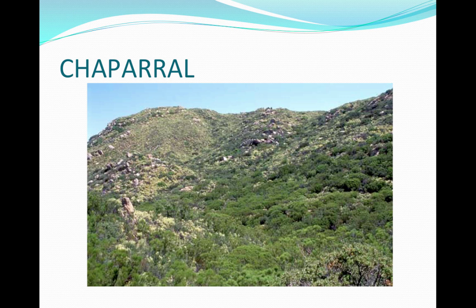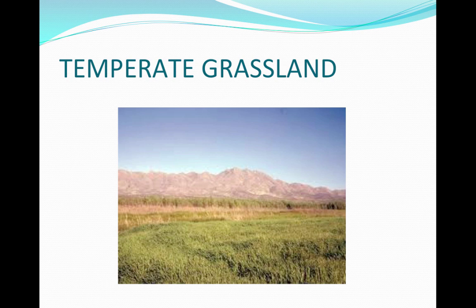Chaparral are in coastal regions with rainy winters, dry summers, a variety of temperatures, and mostly shrubs and small trees; humans have built on chaparrals, often causing fires and landslides. Temperate grasslands are mainly in middle latitudes and the inner parts of continents, with dry winters, wet summers, seasonal temperatures with all four seasons, and are dominated by grass. They have the most fertile soil, making them the location of most farms.